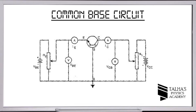Two variable resistances, R1 and R2, are applied. By varying these resistances we can vary the voltages — the input voltage VBE and the output voltage VCC.